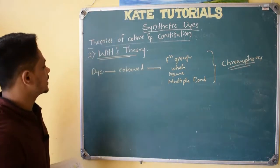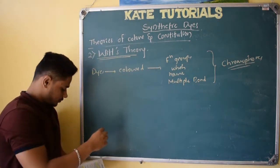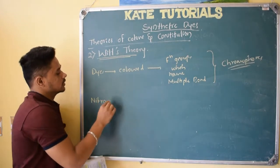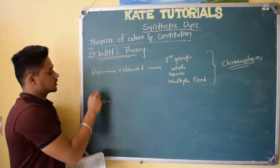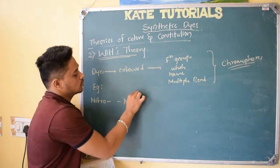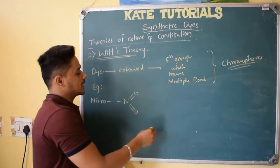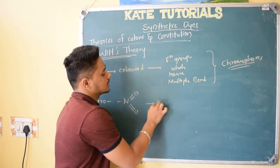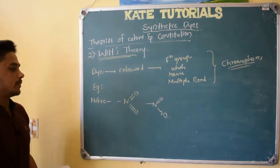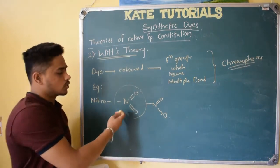The first example is the Nitro group. The Nitro group has N with double bond O, double bond O. Some people write this Nitro group differently — they will make it a coordinate bond. If you are comfortable writing it that way, no problem.